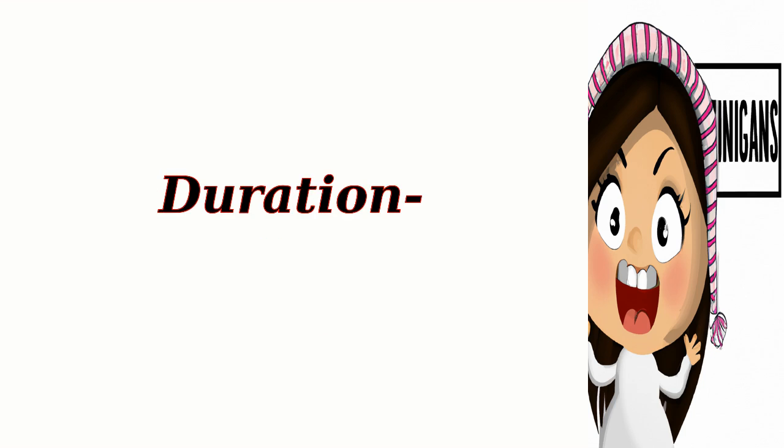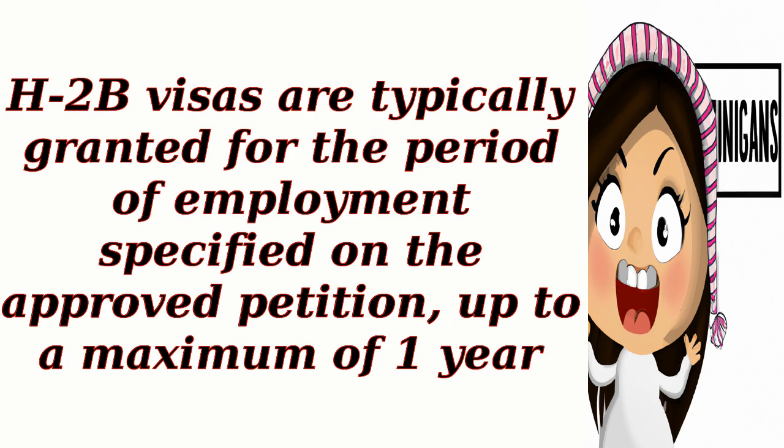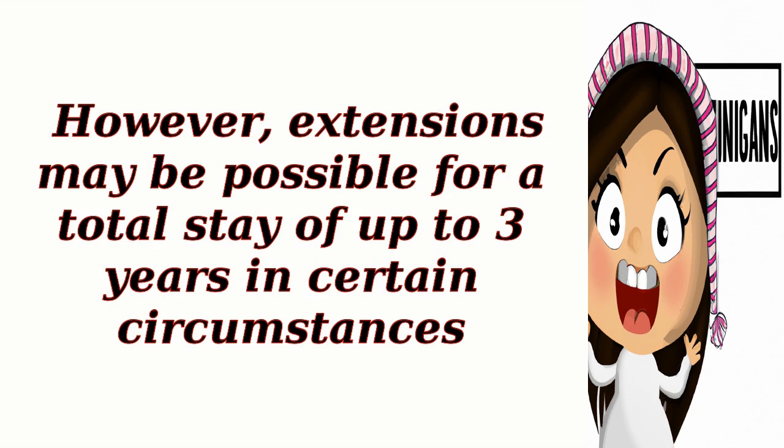Duration. H-2B visas are typically granted for the period of employment specified on the approved petition, up to a maximum of one year. However, extensions may be possible for a total stay of up to three years in certain circumstances.